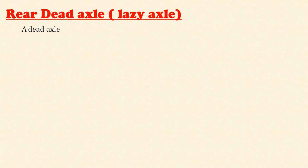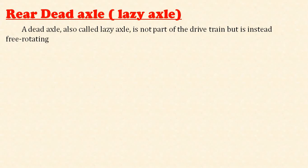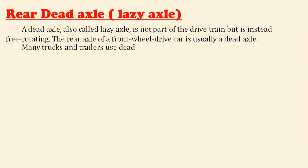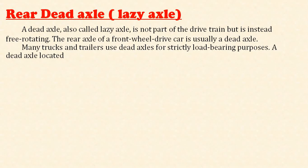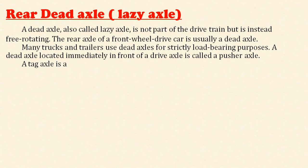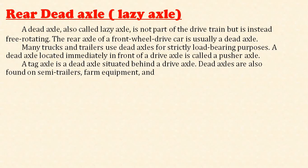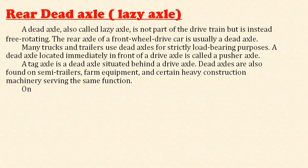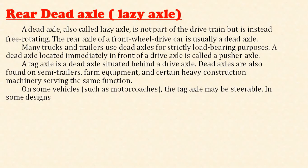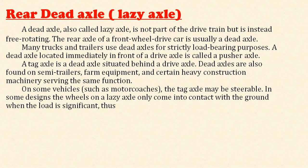The rear dead axle is also called a lazy axle. It is not part of the drivetrain but instead is free-rotating. The rear axle of a front wheel drive car is usually a dead axle. Many trucks and trailers use dead axles strictly for load-bearing purposes. A dead axle located immediately in front of the drive axle is called a pusher axle. A tag axle is a dead axle situated behind the drive axle. Dead axles are also found on semi-trailers, farm equipment, and certain heavy construction machinery.